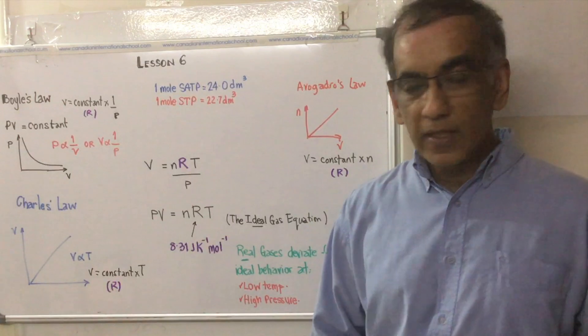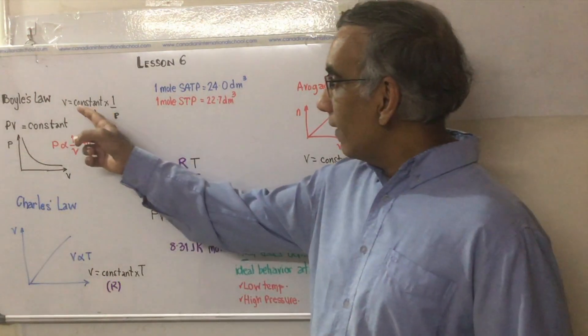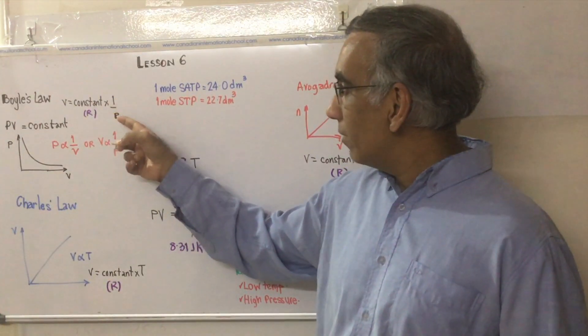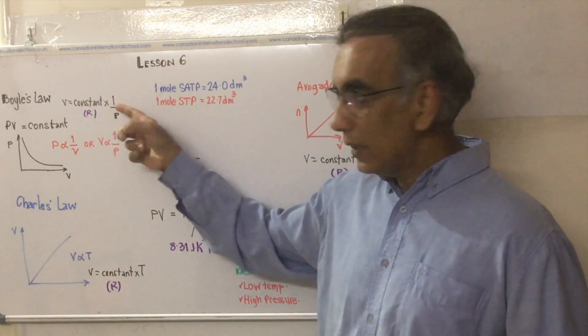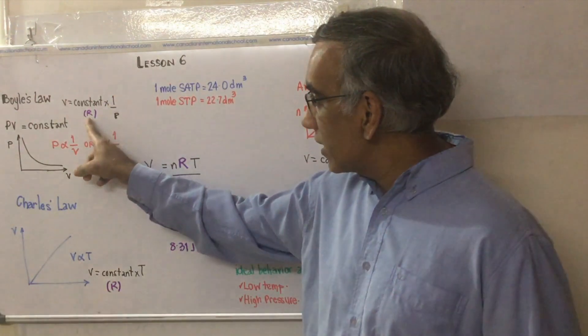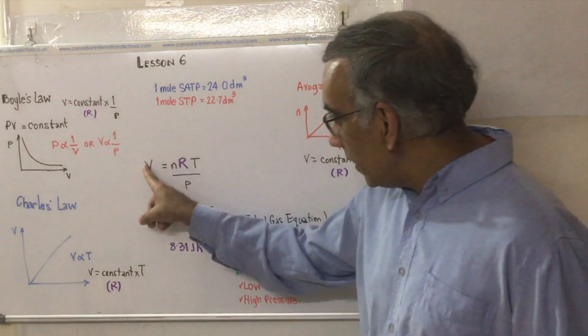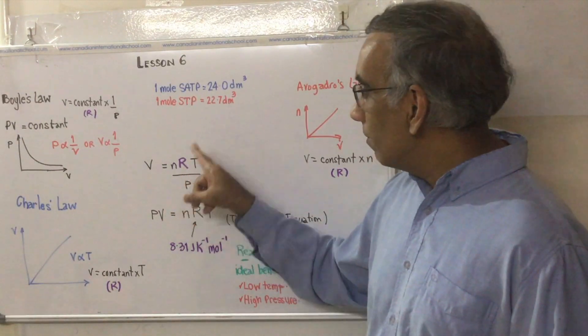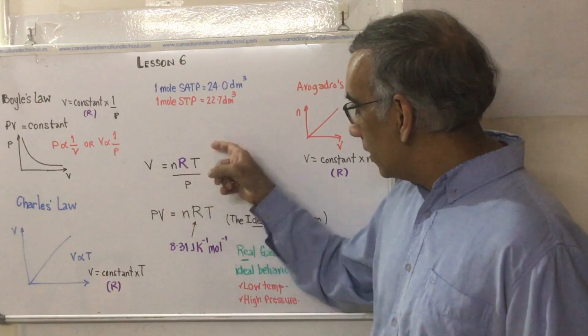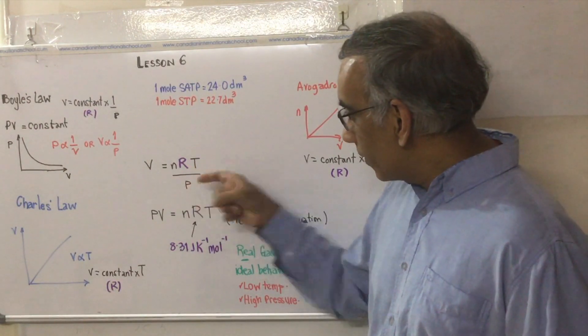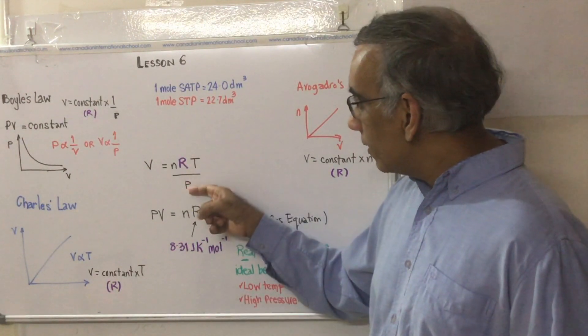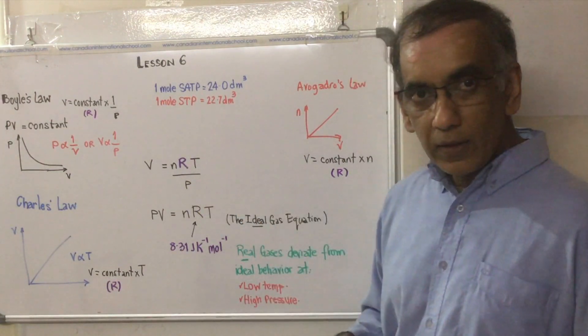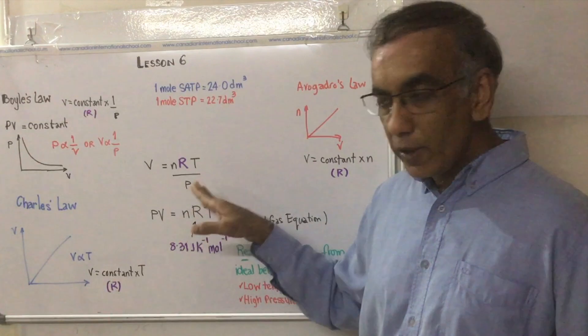Another way of expressing that is to say that V is equal to some constant value multiplied by one over P. We're going to call that constant value R. So V equals some constant value multiplied by one, which is understood, over P. R divided by P. A one is understood at the top. So that is built into this expression.